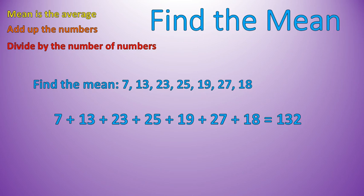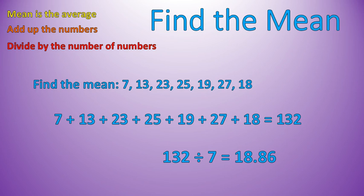We added up the numbers — 7, 13, 23, 25, 19, 27, 18 — and we get 132. I take 132 and divide by 7, which is the number of numbers, and that gives me 18.86. Now I gave you a number that wasn't going to equal out to a nice even number so that you would learn to trust your calculator. Because with mean, with the average, you will often get one with a funky decimal.